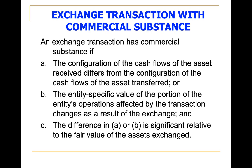Or Letter B: the entity-specific value of the portion of the entity's operations affected by the transaction is significantly affected — meaning it changes significantly as a result of the exchange. For example, if previously you operated utility jeepneys but exchanged them for buses and became a bus operator, the entity-specific value is expected to increase significantly, so the exchange transaction is considered to have commercial substance.